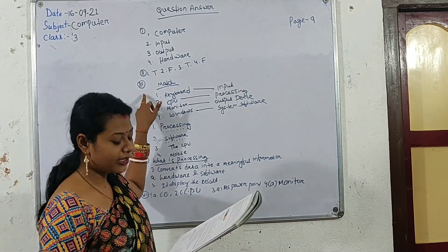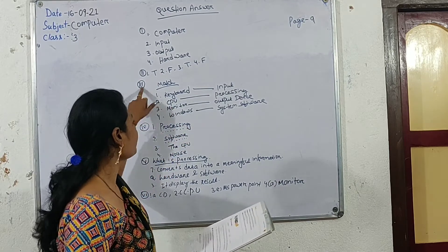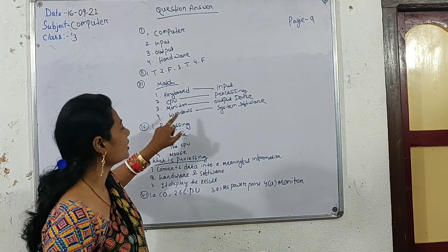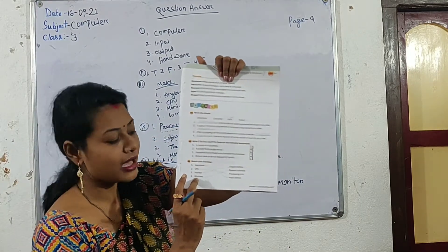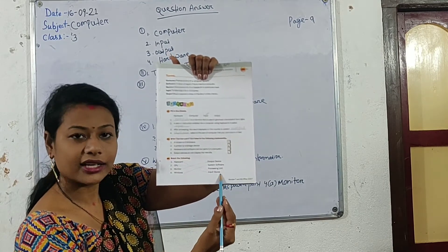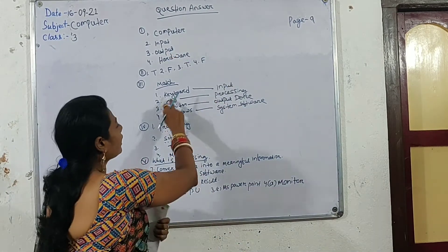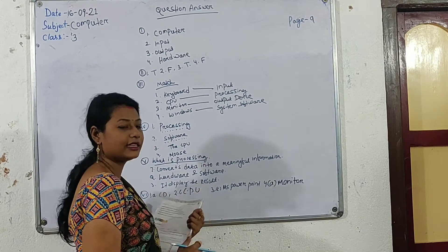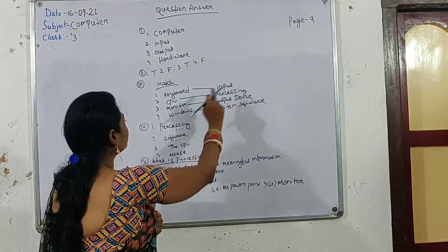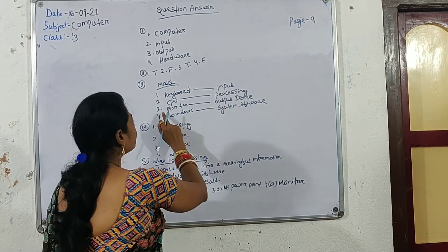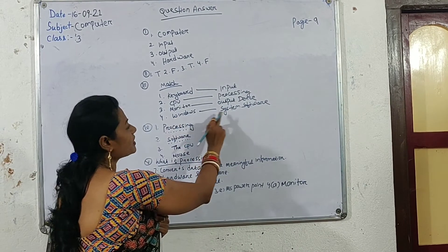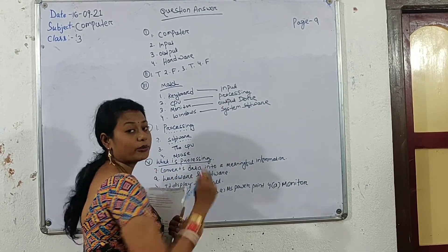Now come to third number. The items listed are: first, keyboard; second, CPU; third, monitor; fourth, Windows — it is system software.